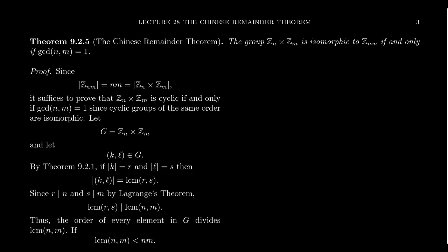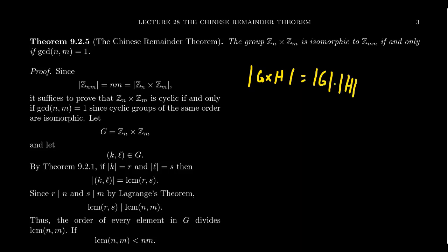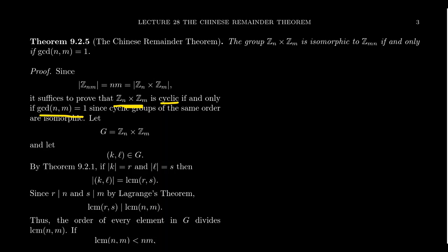To see the proof, the first thing to observe is that ZNM and ZN × ZM are both groups of the same order. The cyclic group ZNM clearly has order NM, and the order of a direct product equals the order of G times the order of H, which is also N times M. So these are both abelian groups of the same order. To prove the statement we just have to determine under what conditions ZN × ZM is cyclic, because every cyclic group is uniquely determined by its order — if we can prove the group is cyclic, that forces an isomorphism between the two.